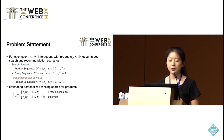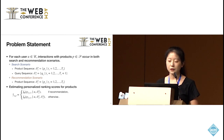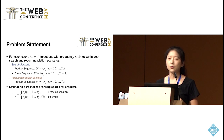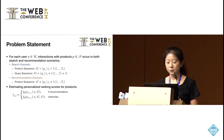Before illustrating the model details, I will introduce the problem statement. For each user, interactions with products occur in both search and recommendation scenarios. In the search scenario, we have two sequences — a product sequence and a query sequence — which are time-aligned, and the current query is included in the query sequence. In the recommendation scenario, we have a product sequence. The unified model aims to estimate personalized ranking scores for all products in both scenarios.